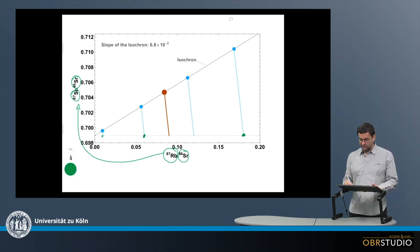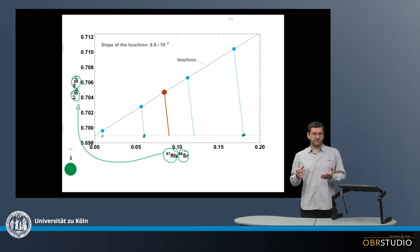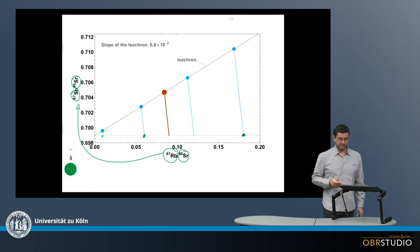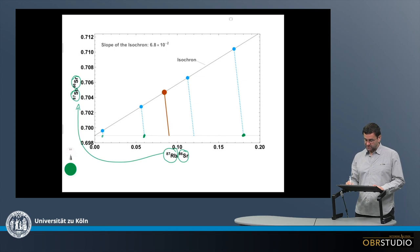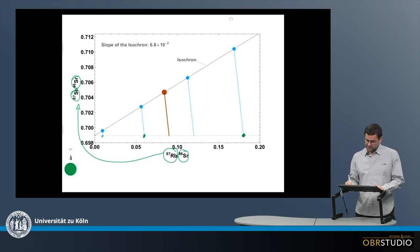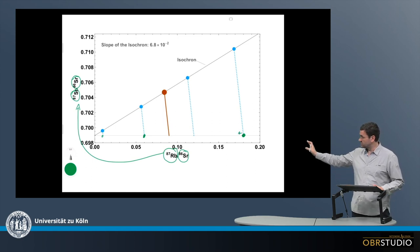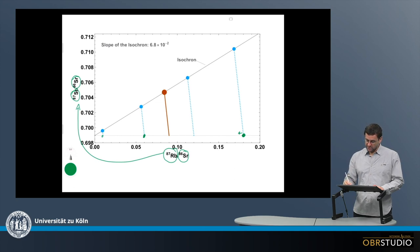Starting with the component that has a high rubidium-strontium ratio: if there is a lot of rubidium, it automatically means there is a lot of rubidium-87. As rubidium starts to decay, the composition of this component moves towards lower rubidium concentrations. At the same time, strontium-87 is produced, so the composition moves upward.